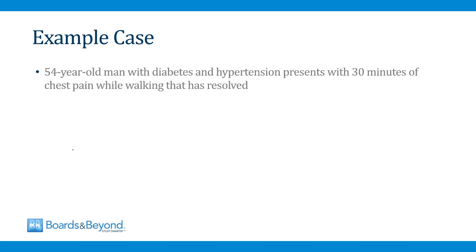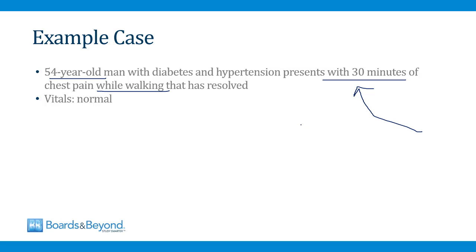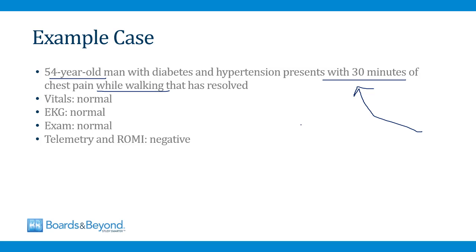I'll finish by walking through two cases. The first is a 54-year-old man with diabetes and hypertension who presents with 30 minutes of chest pain while walking that has resolved. This sounds like stable angina, but you still have to go through the steps. We assess his vitals — normal, so he's not in shock or hypoxemic. EKG is normal, ruling out STEMI. A quick exam is normal. He's placed on telemetry and undergoes a rule-out MI protocol with serial CK and troponin, which is also negative. He's then referred for a cardiac stress test, which is positive — giving us our diagnosis of stable angina.